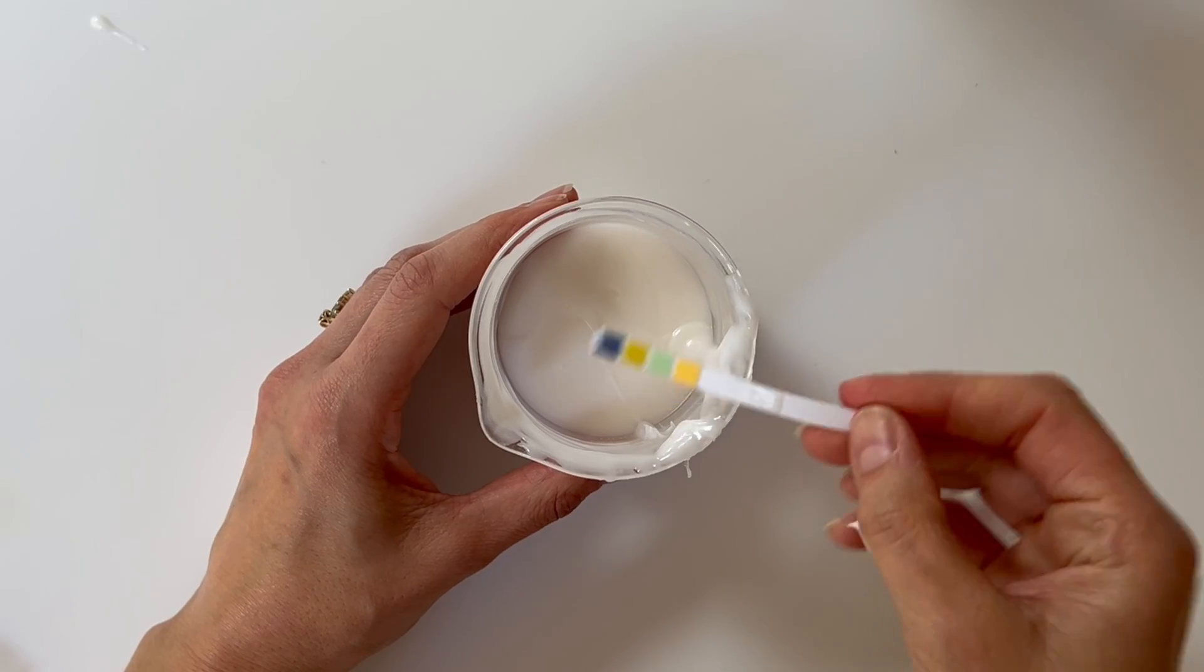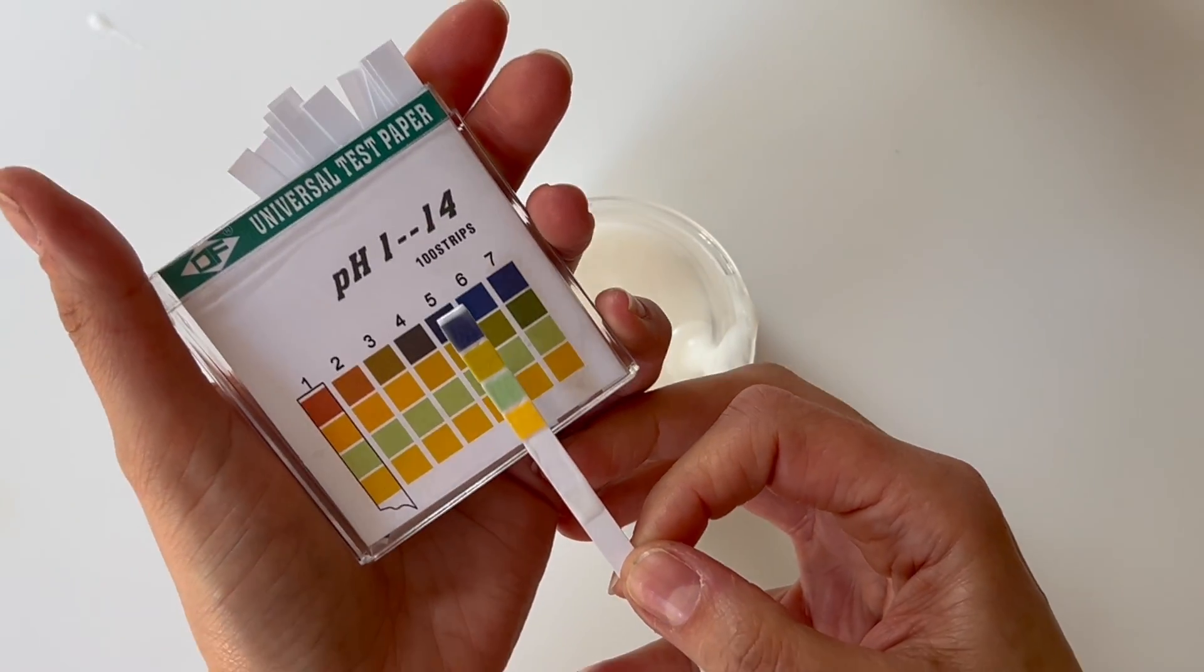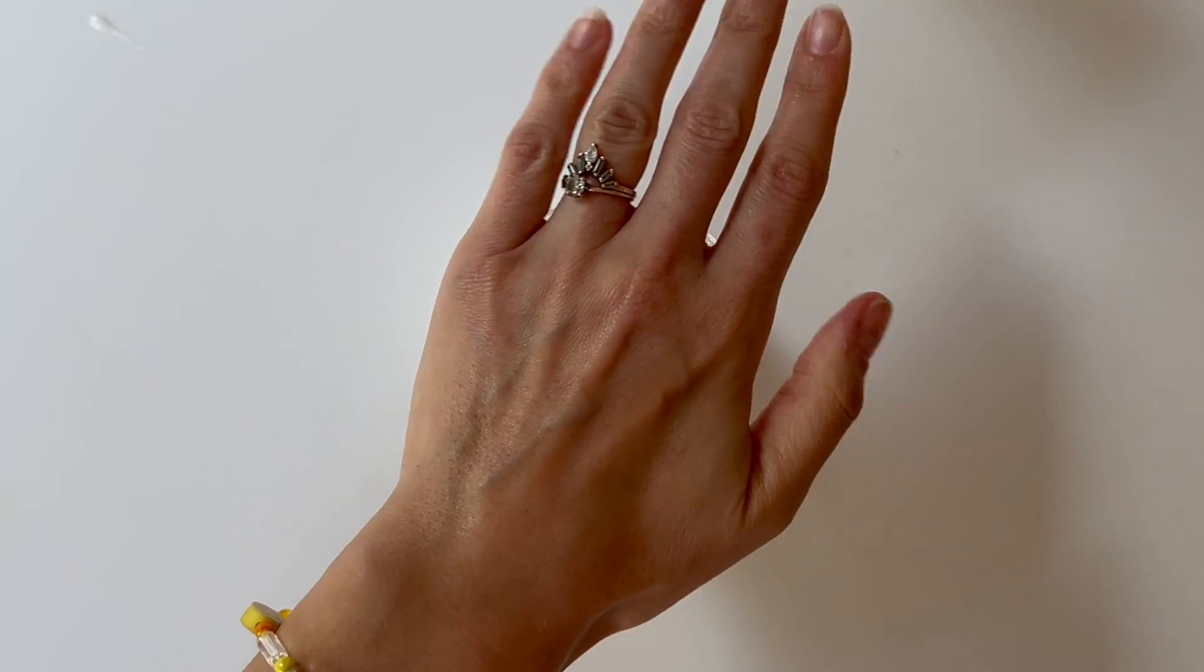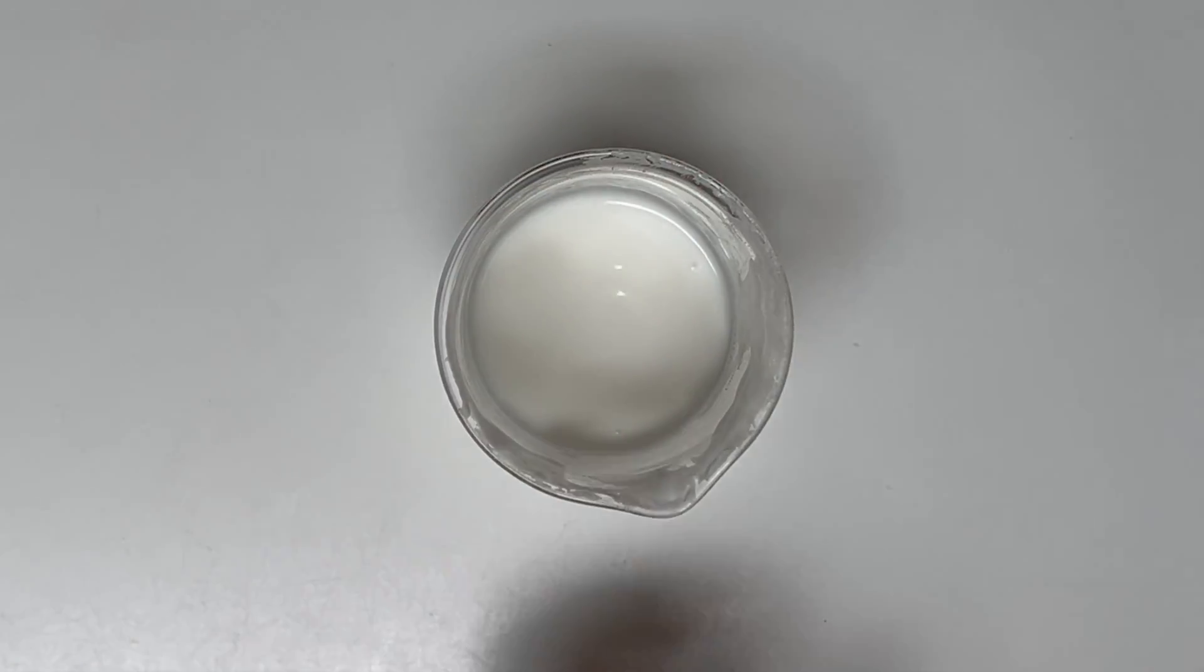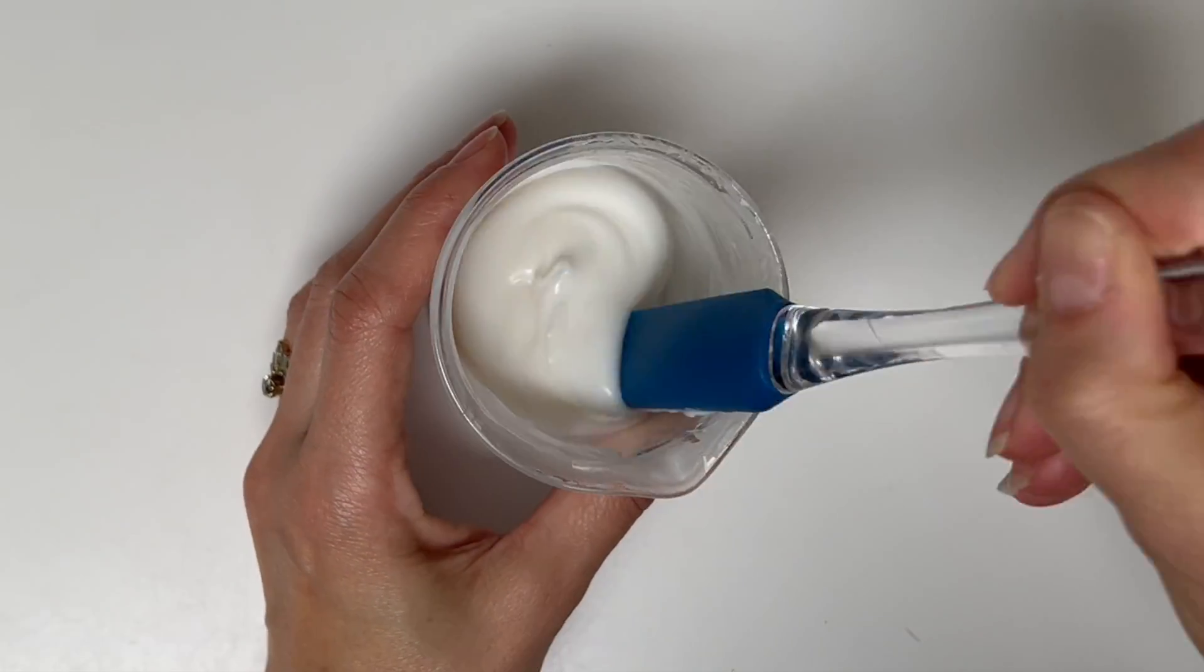And try again. And that's got it right around 5.5, which is exactly where we want it. Now we're going to cover it and leave it overnight. It will thicken up to its full viscosity. And we'll give it a stir. And now we can pot it.